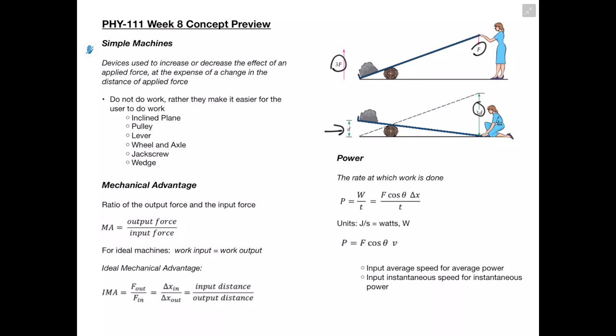This brings us into mechanical advantage, which is the ratio of the output force and the input force. For ideal machines, our work input is going to be equal to our work output. By ideal, we mean machines where we don't have any outside forces besides our applied force acting on the system — for instance, no friction. Our output force over our input force is going to be equal to our input distance over our output distance, which is basically what we saw in this example.